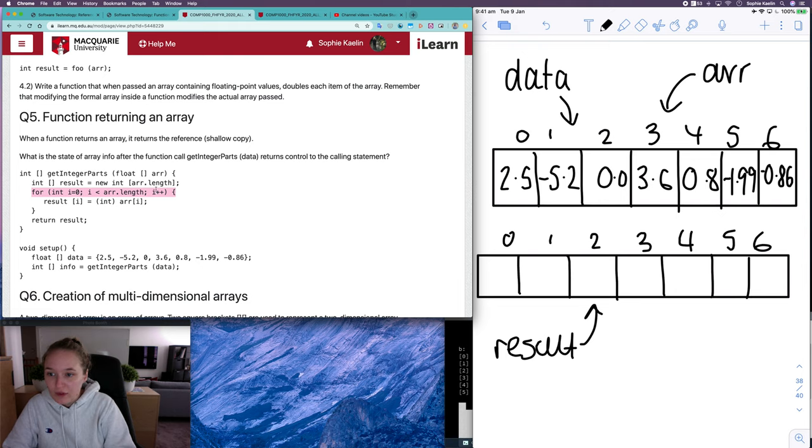Next in our function we have a loop and it's that loop that we've seen many times before already, that we know goes through each item in an array, where i is representing the index of each item in an array.